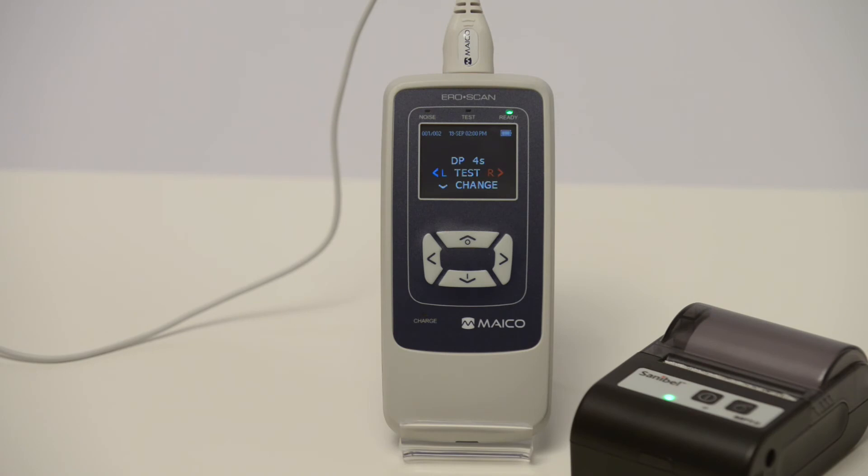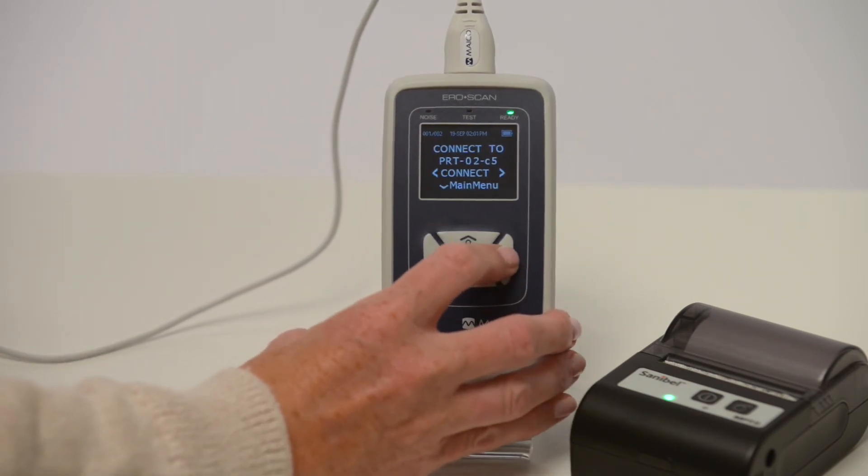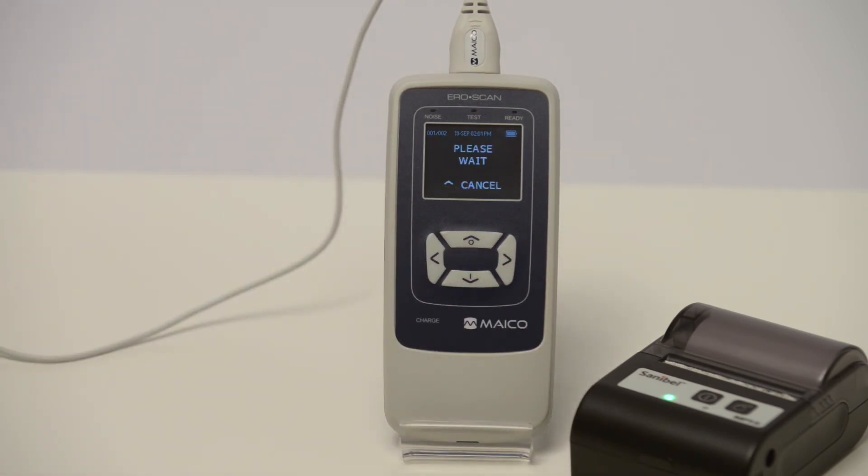To print results on the wireless printer, turn the printer on and press up arrow until printing screen is displayed. Press left or right arrow and results will print.